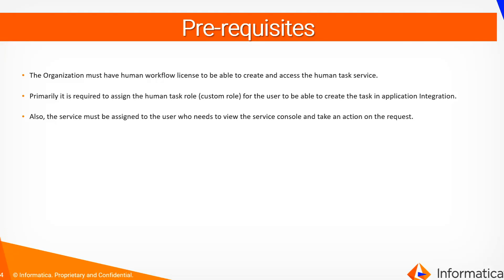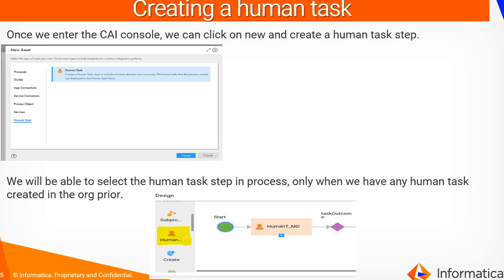The organization must have a human task license to be able to create and process the human task service. We need to create a human task custom role for the user to be able to create the task and use it in application integration. We also need to set a user role for the user who needs to view the task in the service console and take the required action. Once we enter the CI console we need to click on new and create a human task step — this step is only visible if we have the license. In the process designer, the human task step can only be selected when a human task has already been created in this organization.